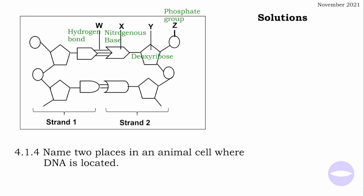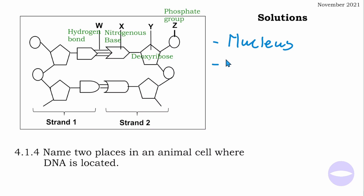Question 4.1.5: name two places in an animal cell where DNA is located. Animal cells do not have chloroplasts — chloroplasts are only found in plant cells — so you cannot write chloroplast. In an animal cell, DNA is found in the nucleus and in the mitochondria.